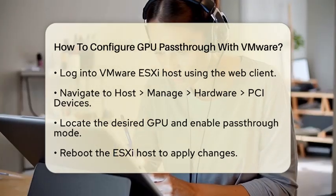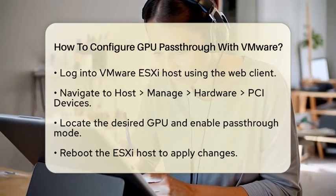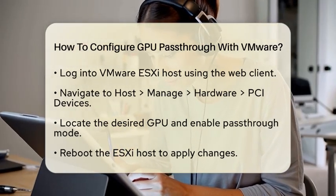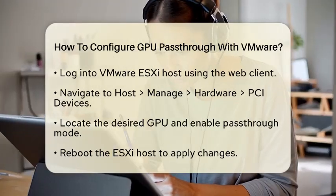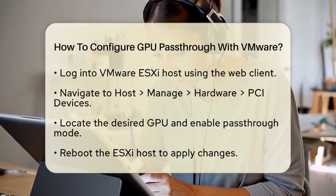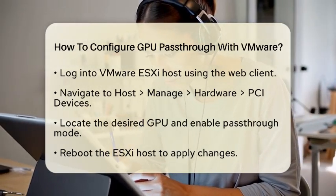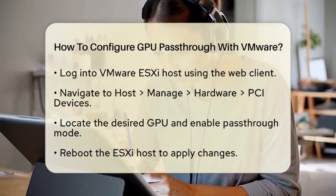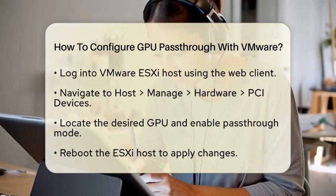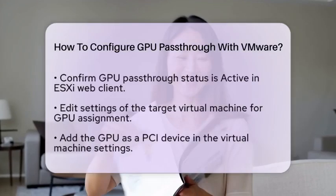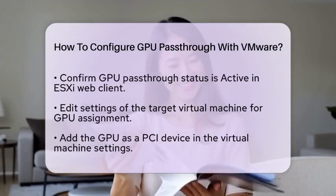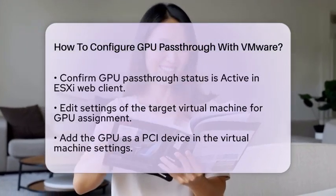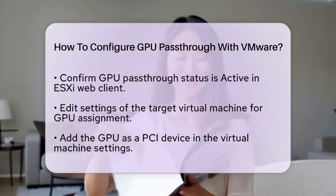Now it's time to assign the GPU to a virtual machine. Edit the settings of the virtual machine you want to use. Add a new device by selecting Add Other Device and then PCI Device. Choose the GPU from the drop-down list to assign it to the virtual machine. Make sure to save the settings.